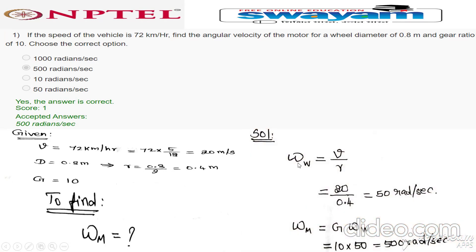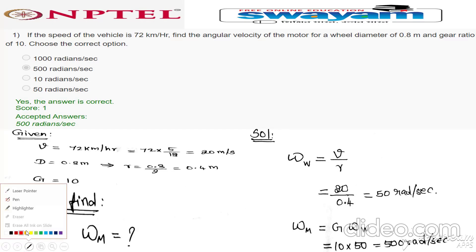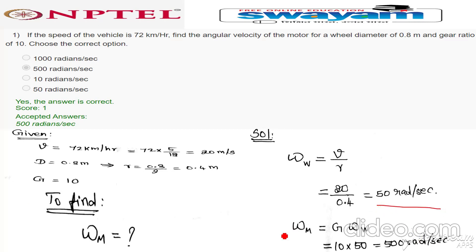The formula for angular velocity of wheel is omega_v equals v by r. V is equal to 20 meter per second and r is 0.4. Simply divide these two, we get the answer 50 radian per second.